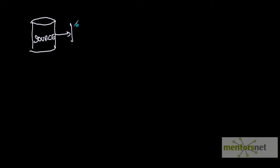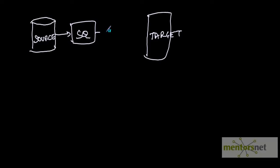Basically you will normally have a requirement where you have a source and you do not want to take all the records from the source to the target. You want to filter some of the records going from source to target. Suppose 100 records are going — based on some criteria you want to send less than 100 into the target. So how do you do that?